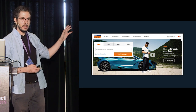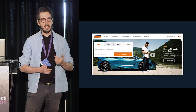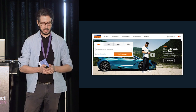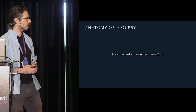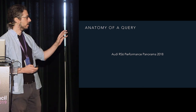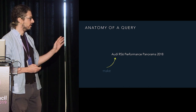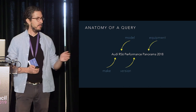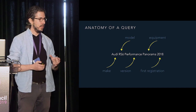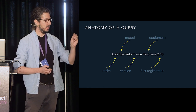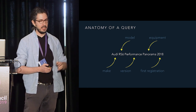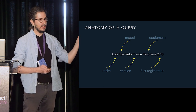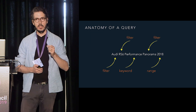Our goal with this feature is to provide an alternative search entry so that users don't need to think about filters — they just describe what they're looking for and we map it to the corresponding filters and keywords. Take the query 'Audi RS6 performance panorama 2018': Audi is a make, RS6 is a model, performance is a specific version, panorama is equipment, and 2018 is the first registration. Ideally the system sets three filters, one keyword, and one range query.